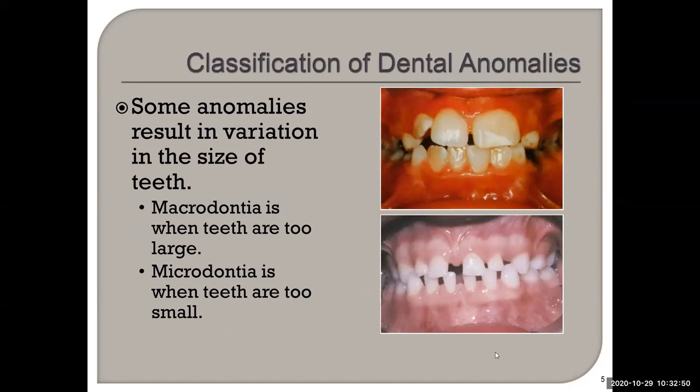Some anomalies result in variation of size. You can have macrodontia, which is when the teeth appear very large, or microdontia, when the teeth appear very small.